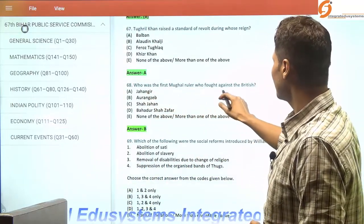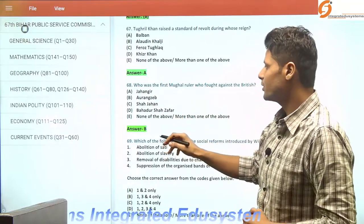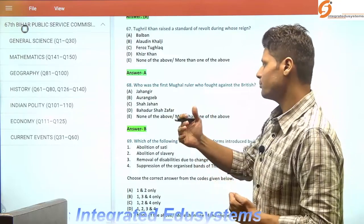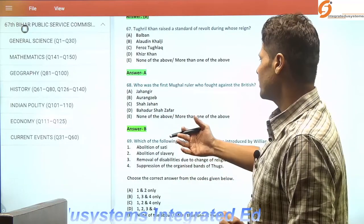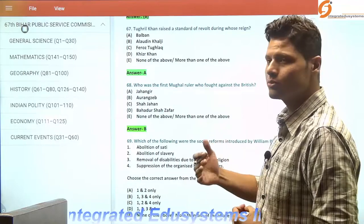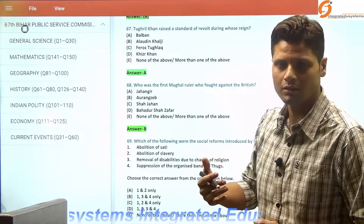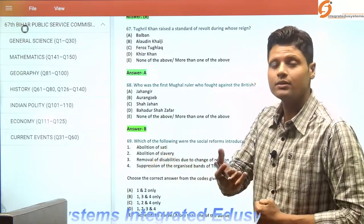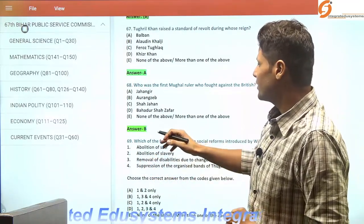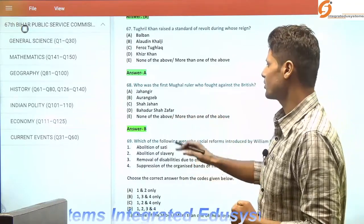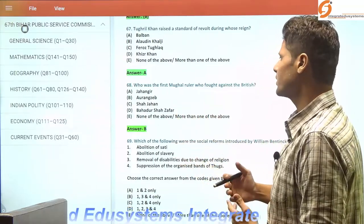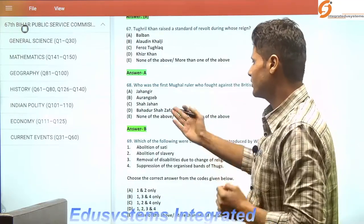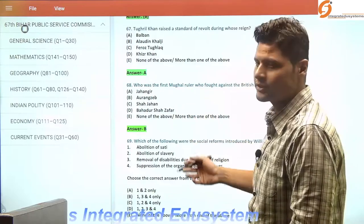Who was the first Mughal ruler who fought against the British? It was Aurangzeb. Right from the start of Mughal rule, Mughal rulers were more welcoming towards the East India Company, their trade relations, and their envoys at court. Till Aurangzeb, it was a welcome territory for the British. But Aurangzeb had some sort of conflict with an English officer, so it was Aurangzeb.